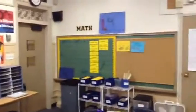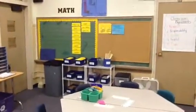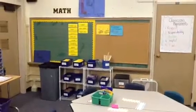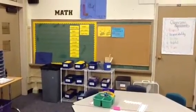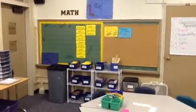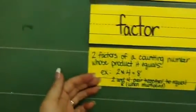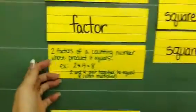As we move around, we've got the math wall. This is where everything is labeled, and we also have word walls — and if you lift each one of the tabs, there is a definition on the backside that kids can flip up to.